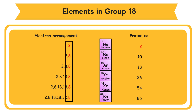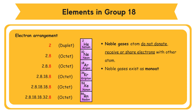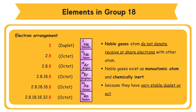Electron arrangement: duplet, octet, octet, octet, octet, octet, octet. The outermost shell of the helium atom is fully occupied with two valence electrons — helium has achieved a stable duplet electron arrangement. The outermost shells of neon, argon, krypton, xenon, and radon atoms are fully occupied with eight valence electrons and have achieved a stable octet electron arrangement. Noble gas atoms do not donate, receive, or share electrons with other atoms. Noble gases exist as monoatomic atoms and are chemically inert because they have a very stable duplet or octet electron arrangement.